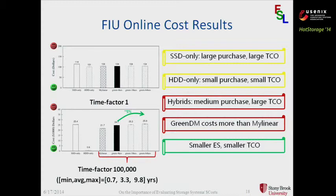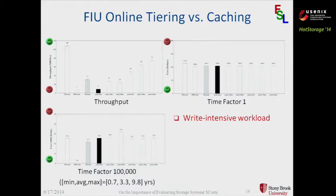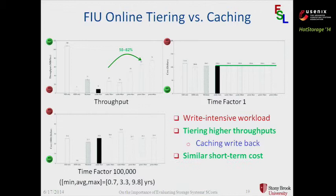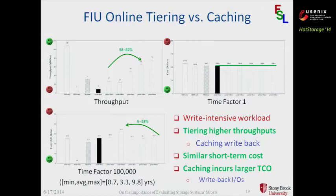What will happen to the full comparison between tiering versus caching? Remember, this is a write-intensive workload. We present three figures: one throughput figure, one short-term cost figure, and one long-term cost figure. In terms of throughput, tiering actually achieves higher throughput. The reason is due to the write-back penalty in the caching system. When we look at short-term cost, they achieve similar short-term cost for the same reason as before. In terms of long-term cost, caching in this case incurs larger total cost of ownership because of the write-back IOs in the caching system. For this workload, caching actually incurs larger total cost of ownership.